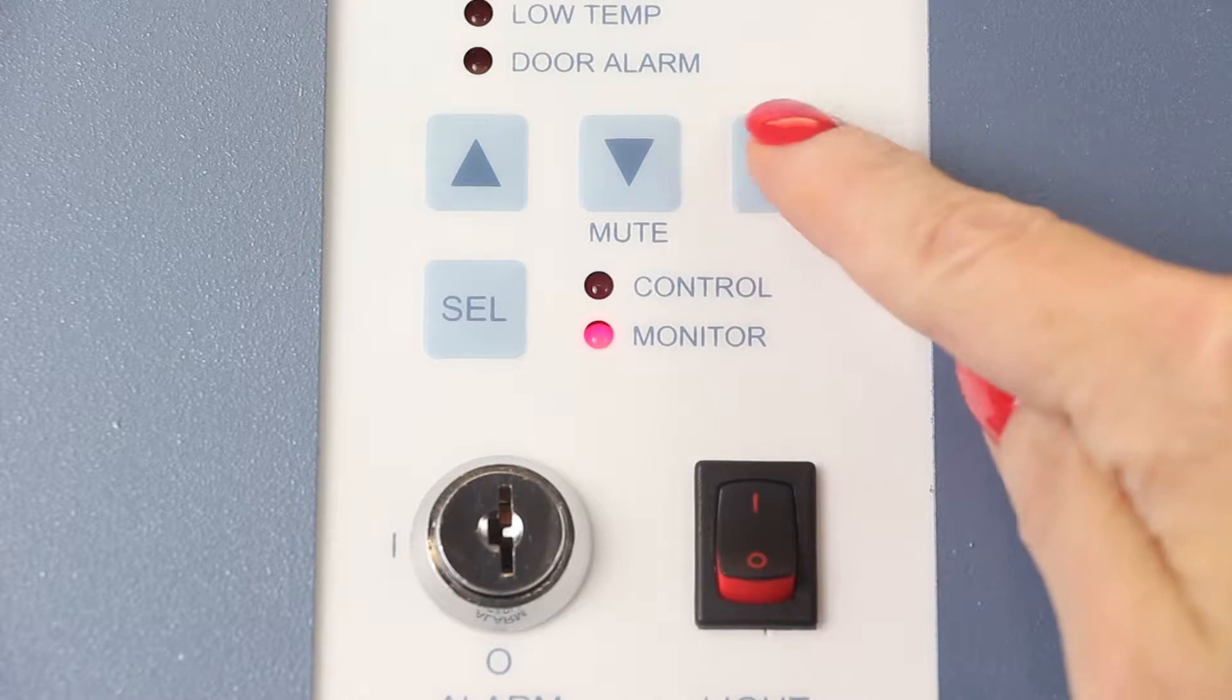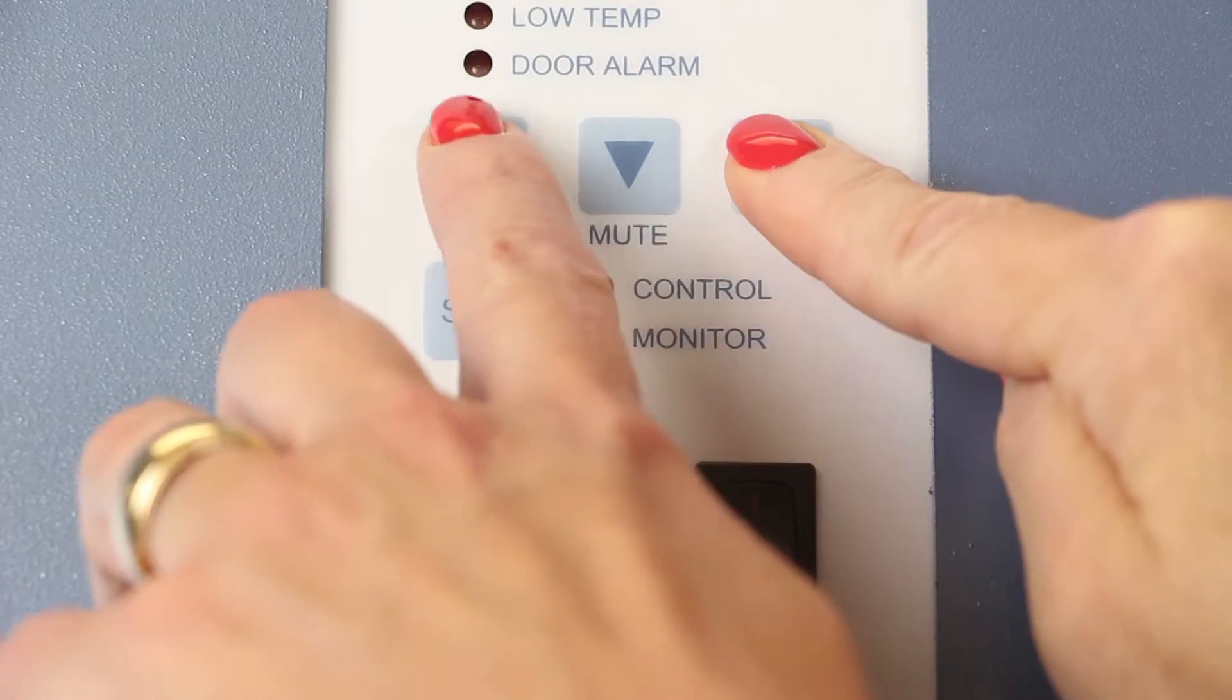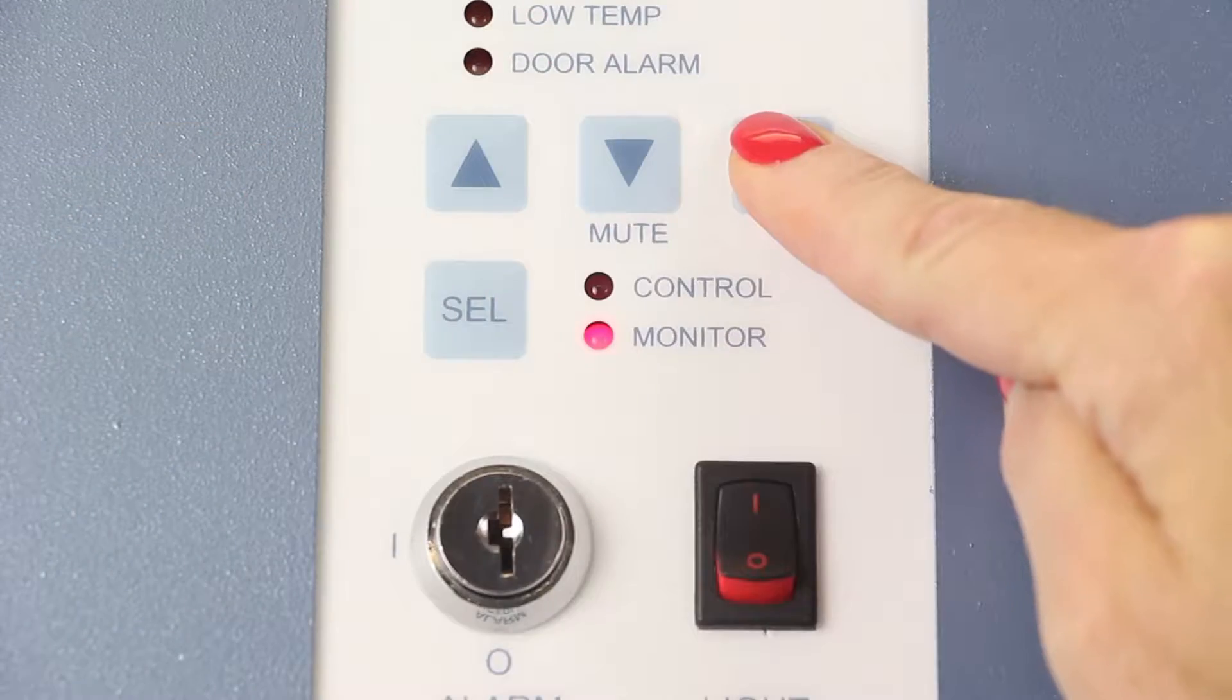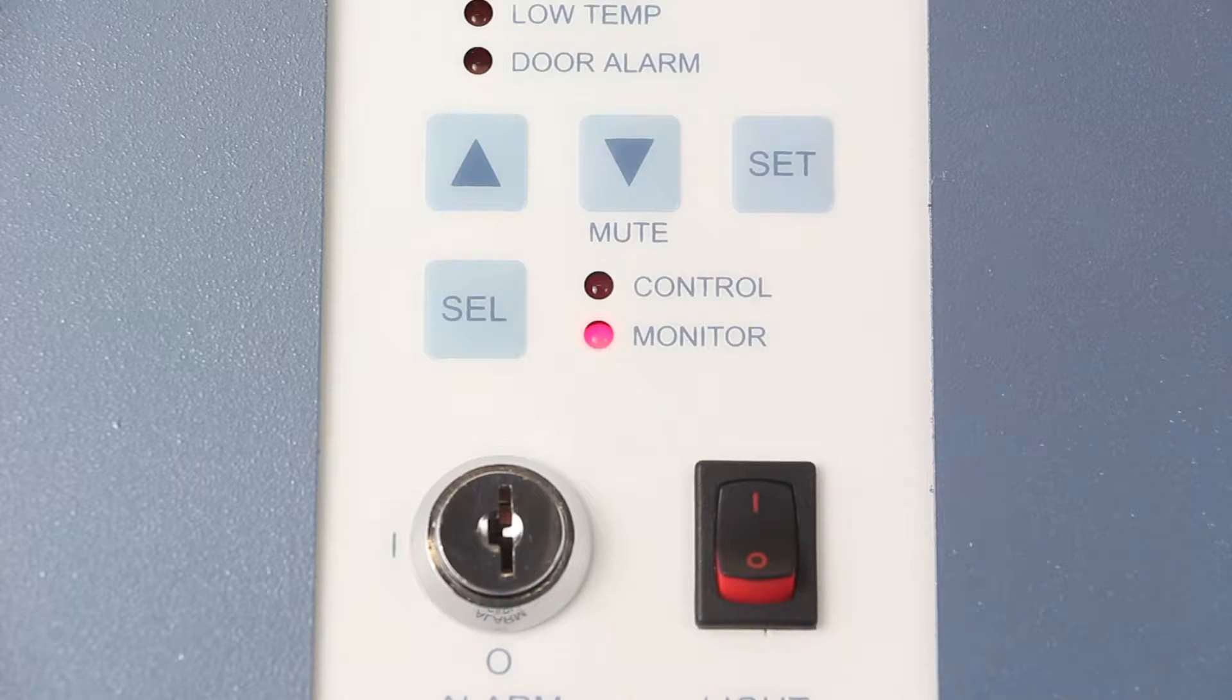These include high and low temperature alarms, a door open alarm, and a power failure alarm. If needed, temperature set points and alarm settings can be adjusted within the controller.